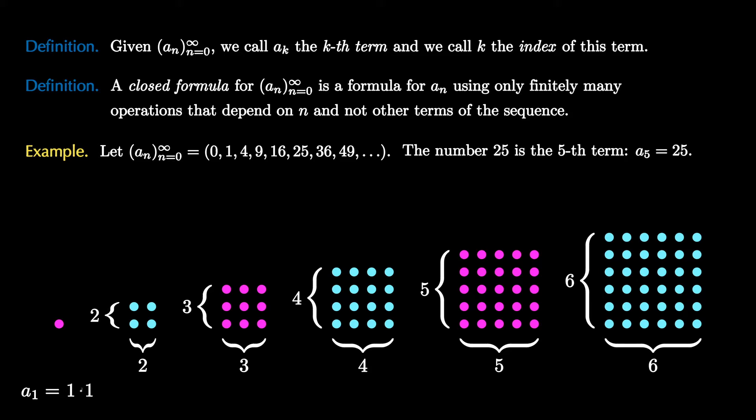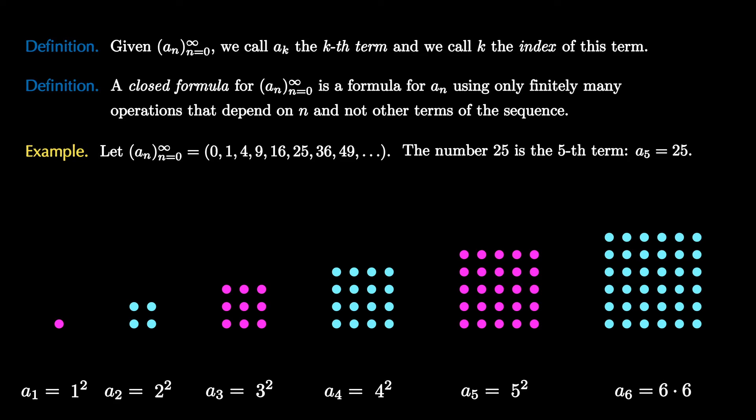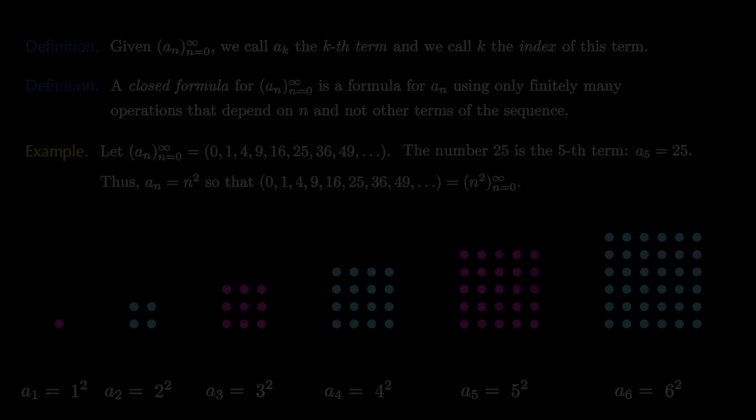From this we see that a₁ equals 1 times 1, or 1 squared. a₂ equals 2 squared. a₃ equals 3 squared. a₄ equals 4 squared. a₅ equals 5 squared. a₆ equals 6 squared. From this, we believe the pattern, and we would guess that a closed form is aₙ equals n². Therefore, we have found that this is the sequence of squares.